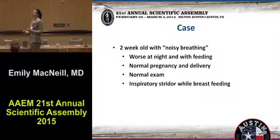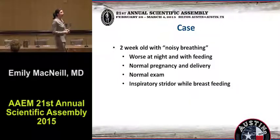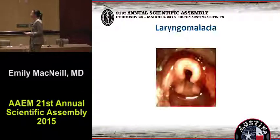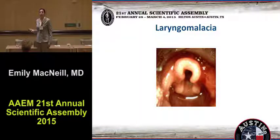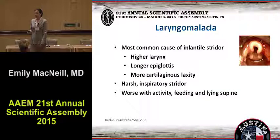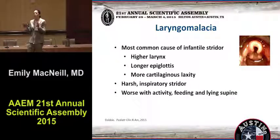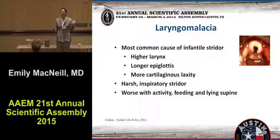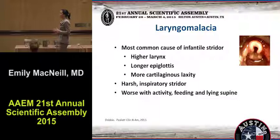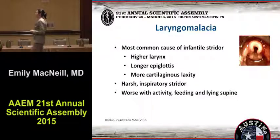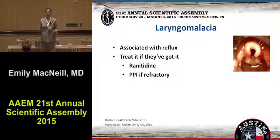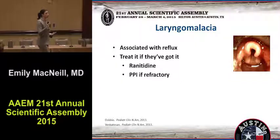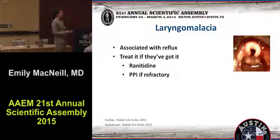Inspiratory stridor that's recurrent most commonly is laryngomalacia. The classic story is a two-week-old who comes in with noisy breathing — they've had a little bit of noisy breathing, it's worse when the child lays down, they've otherwise been normal. The epiglottis has a little omega shape. It's the most common cause of infantile stridor — because they have a higher larynx, a longer epiglottis, and more cartilaginous laxity. This thing just flops in front of their airway when they breathe in. It causes a very harsh noise. It's worse with their activity — which at two weeks is pretty much eating — and when they're lying supine.